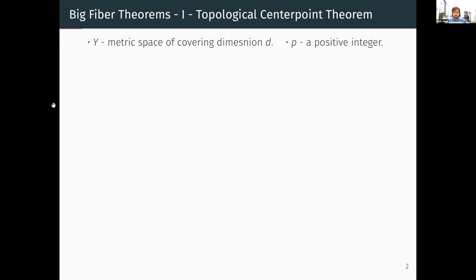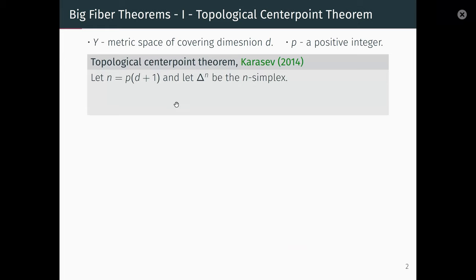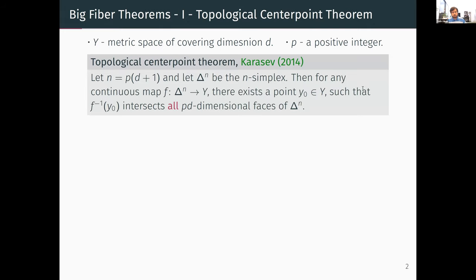For the topological center point theorem, let Y be a metric space of covering dimension d — meaning the Lebesgue covering dimension, where any cover can be refined so that each set intersects at most d+1 other sets. Fix p some positive integer, and let N equal the product p(d+1). Karasov's theorem says that for any continuous map from the N-simplex to Y, there exists a fiber intersecting all pd-dimensional faces of the simplex. Being a 'big fiber' here means intersecting all faces of high enough dimension.